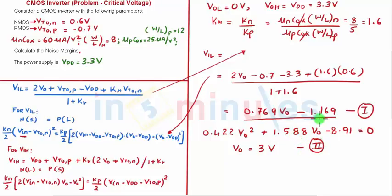So we'll substitute this V out in equation 1 and we'll get the value of our VIL to be equal to 1.13 volts. So I got my VIL.